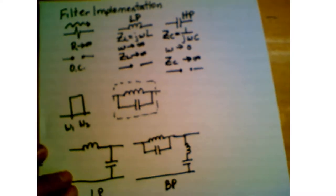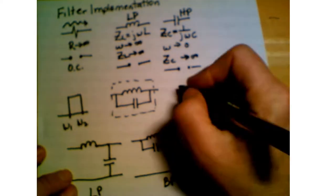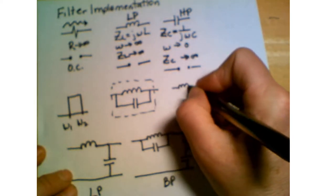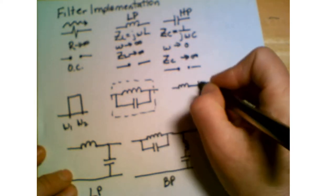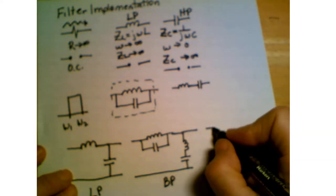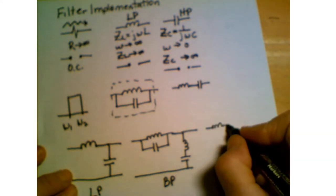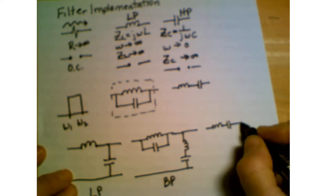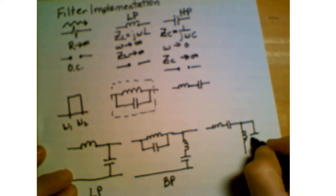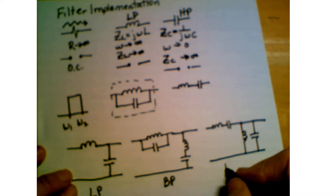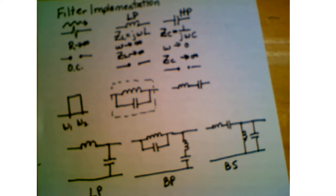For a band-reject filter, we design the filter so that some high frequencies and some low frequencies don't get through. The circuit is designed accordingly, giving us a band-stop or band-reject filter.